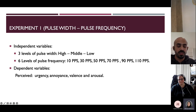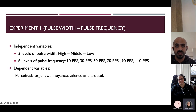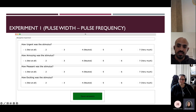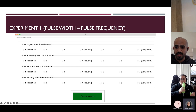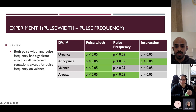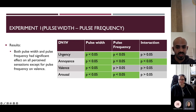In experiment one, I manipulated three levels of pulse width — high, mid, and low — based on detection and discomfort thresholds, and six levels of pulse frequencies. I then presented these to participants and measured perceived urgency, annoyance, valence, and arousal using a Likert scale of seven points. After performing a statistical test, both pulse width and pulse frequency had a significant effect on perceived sensation, except for pulse frequency on valence, which had no significant effect.